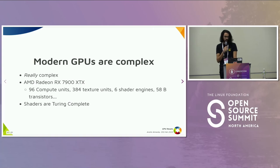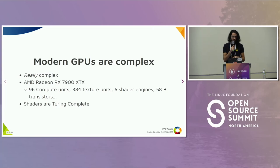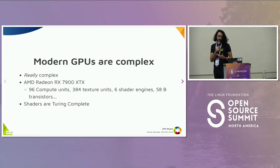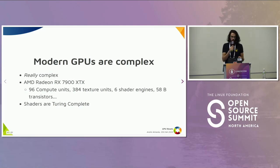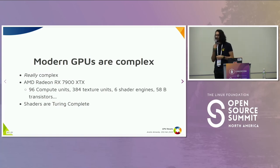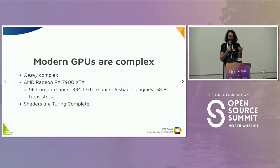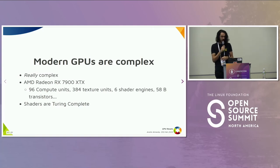That happens because modern GPUs are really complex — very, very complex. If you look at the numbers from the latest AMD GPU, there are a lot of parallel things happening, a lot of compute units, transistors, and shaders are Turing complete. That means you can't guarantee that code won't loop forever. So yes, GPUs are very complex nowadays.